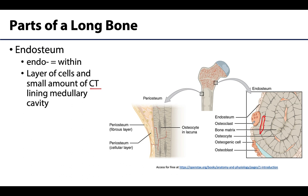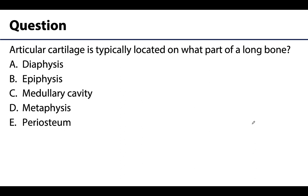Let's spend the last minute testing ourselves on a concept covered in this video. The question is: articular cartilage is typically located on what part of a long bone? Go ahead and pause the video to think through this. The diaphysis is the middle portion of the long bone and is covered with periosteum, not articular cartilage. The epiphyses are located on the ends of a long bone — that sounds promising. The medullary cavity is the hollow middle portion of the diaphysis, so that's not correct.